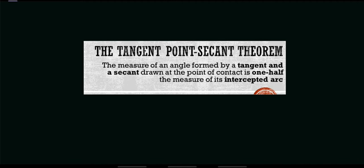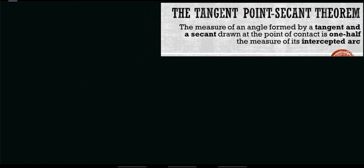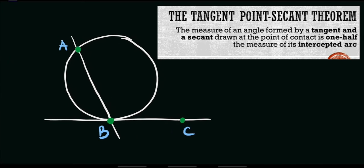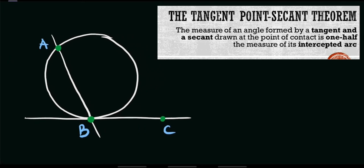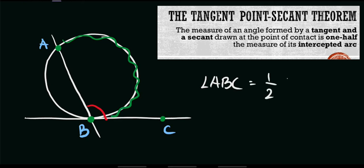According to this theorem, the measure of an angle formed by a tangent and a secant drawn at the point of contact is one half the measure of its intercepted arc. For example, with a given figure or circle, if you are asked to solve for the value of angle ABC, the value of angle ABC is simply half the measure of its intercepted arc. The intercepted arc of angle ABC is from point A up to point B. Therefore, the value of ABC is one half of arc AB. That is our second theorem.